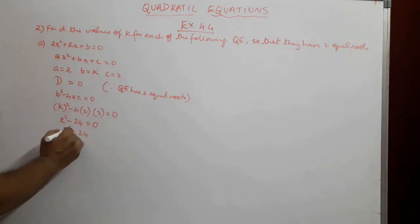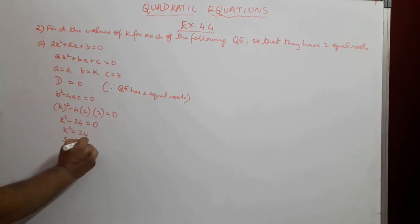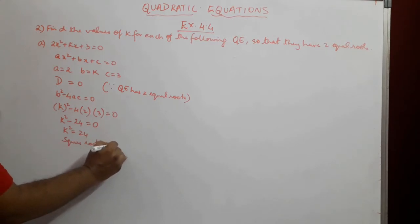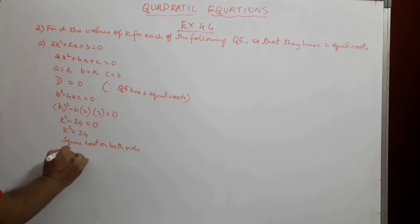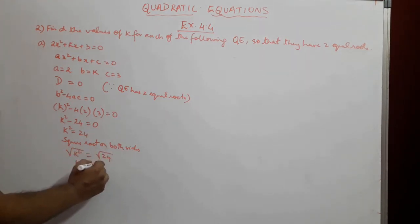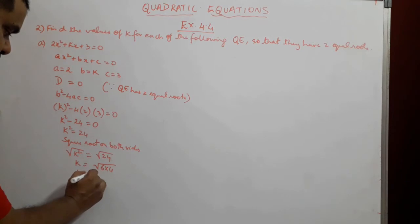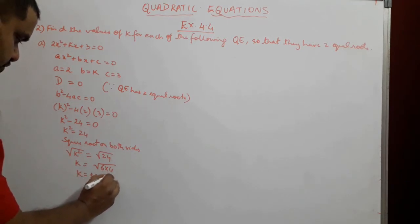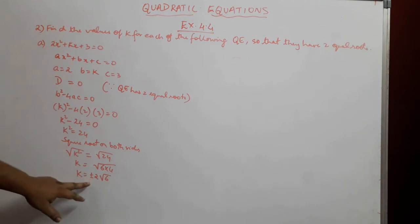Now, in order to get the value of k, we will have to take square root on both sides. Square root of k² gives us k, and here 24 can be written as 6 × 4. k = 6 × 4, square root of 4 is 2. So we can write this plus or minus 2√6. So, value of k is plus or minus 2√6.